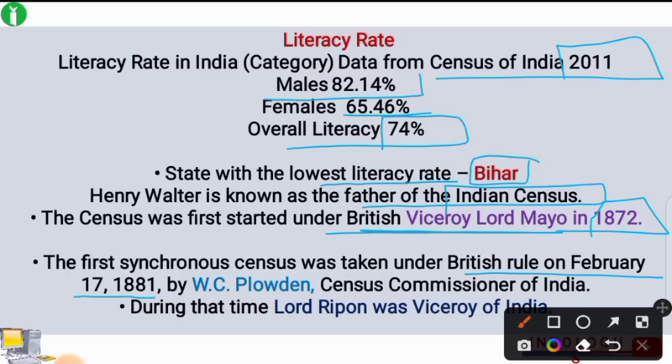The first complete census was done on 17th February 1881 by W.C. Plowden, who was the census commissioner of India. And in 1881, Lord Ripon was the Viceroy of India, who is also called the father of local self-government.